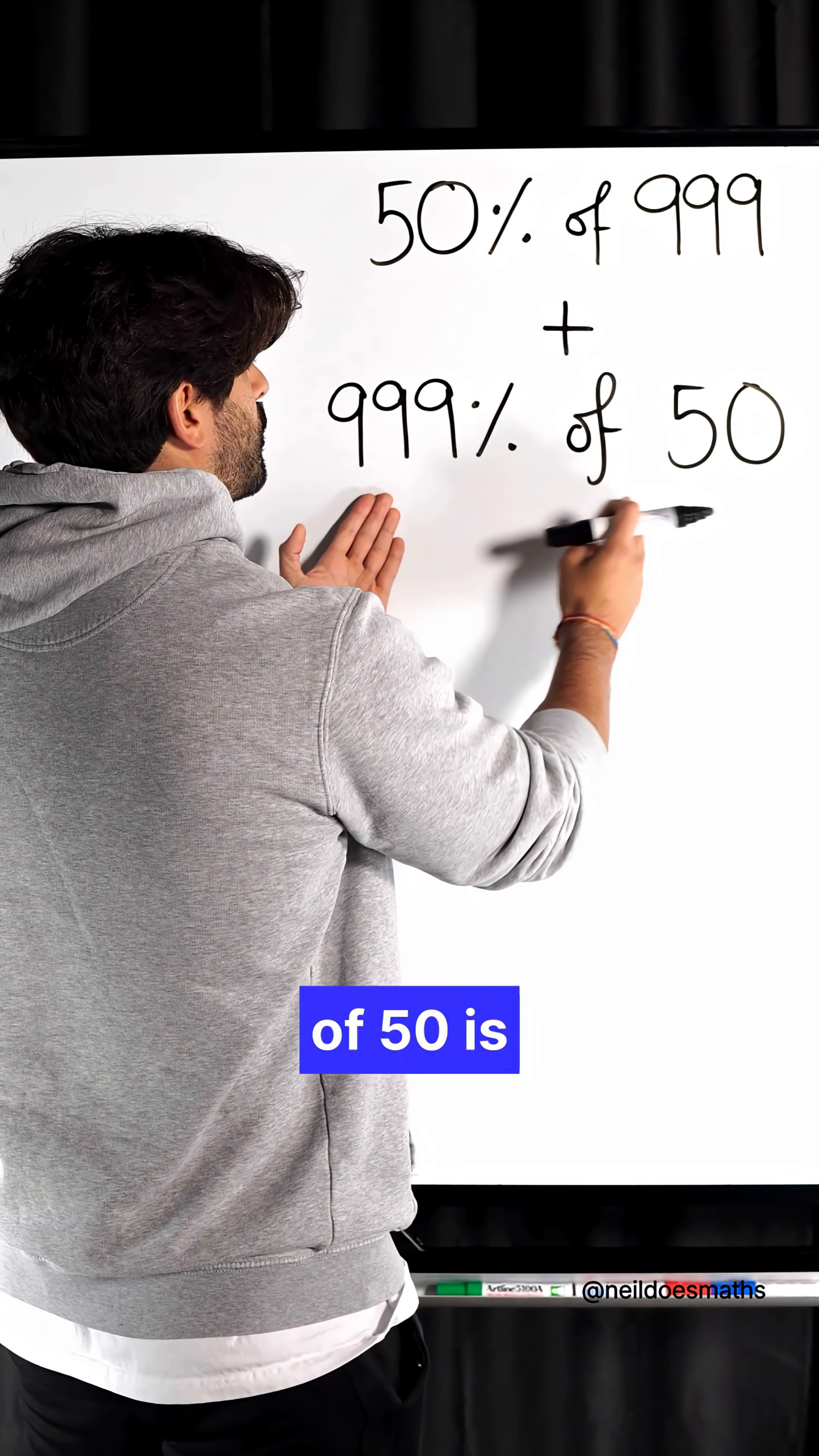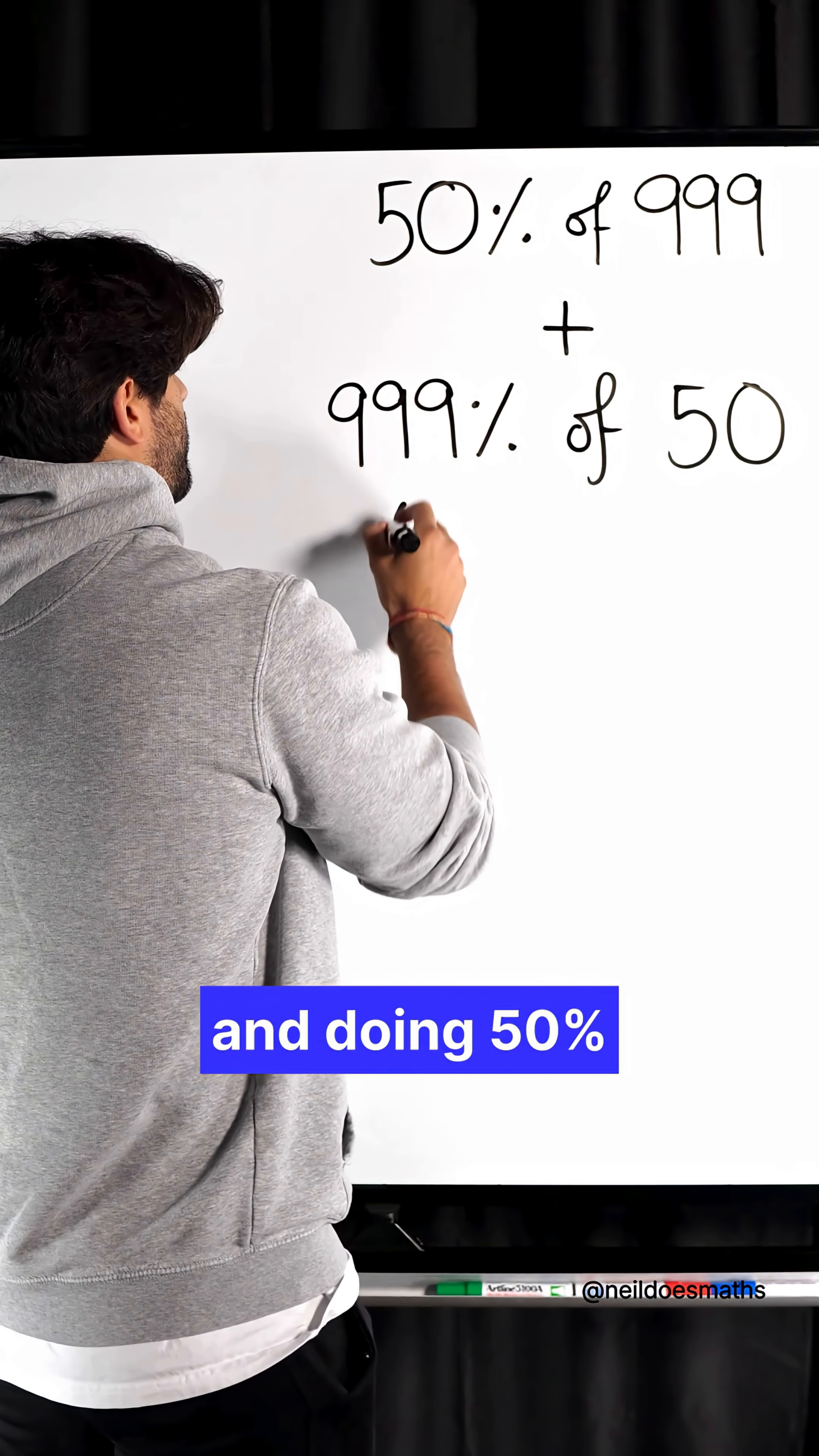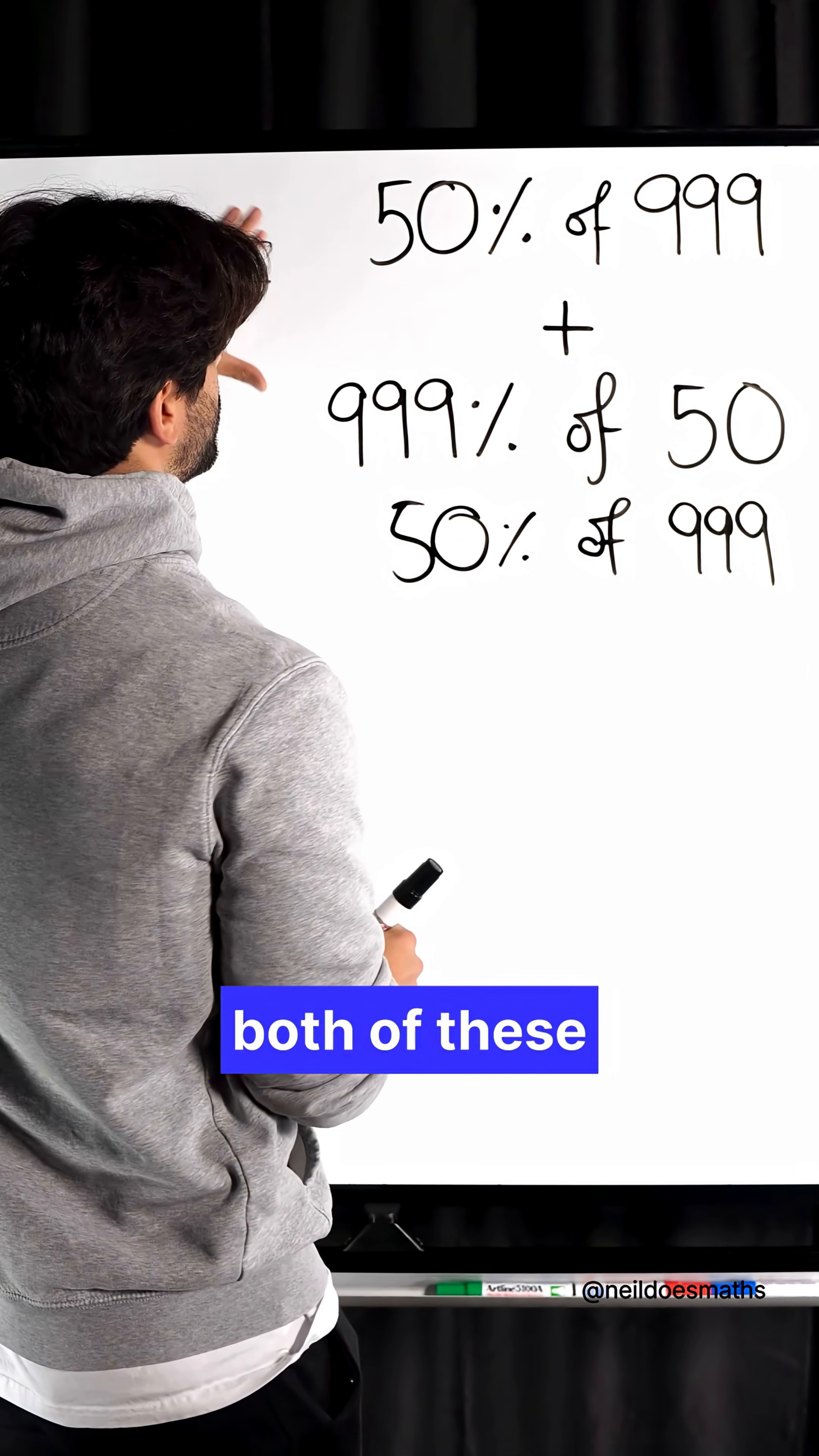So when I look at this, 999% of 50 is actually the same as doing a switcheroonie and doing 50% of 999. So actually, both of these things are the same.